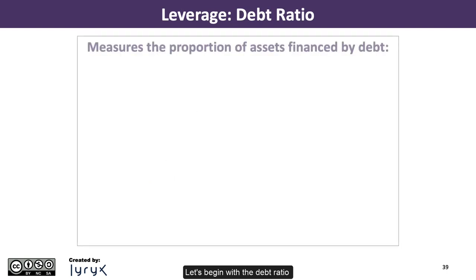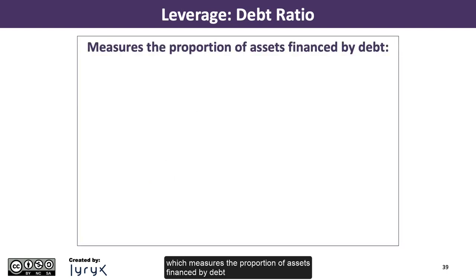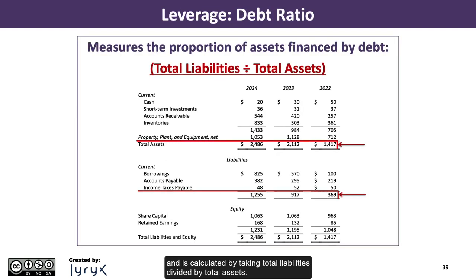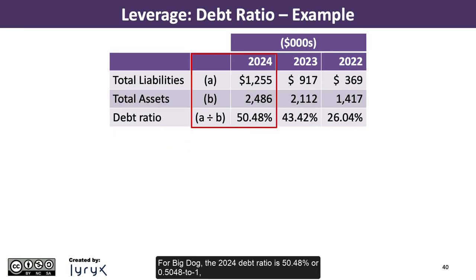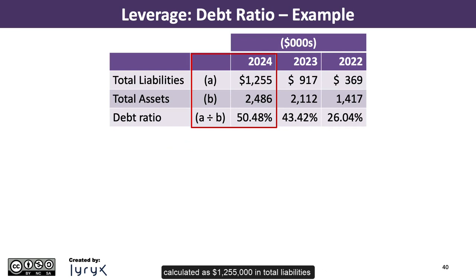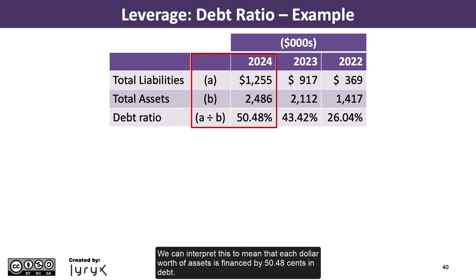Let's begin with the debt ratio, which measures the proportion of assets financed by debt and is calculated by taking total liabilities divided by total assets. For Big Dog, the 2024 debt ratio is 50.48%, or 0.5048 to 1, calculated as $1,255,000 in total liabilities divided by $2,486,000 in total assets. We can interpret this to mean that each dollar worth of assets is financed by 50.48 cents in debt.